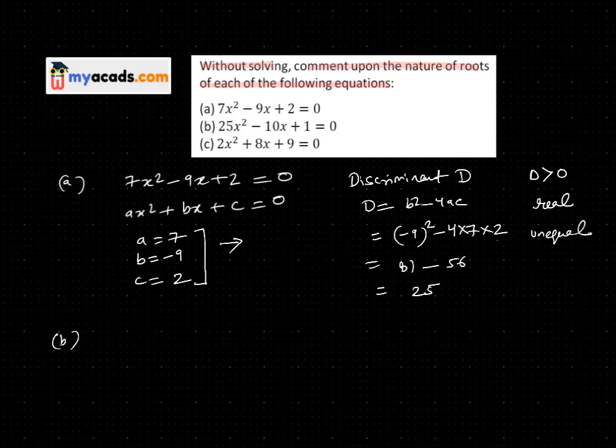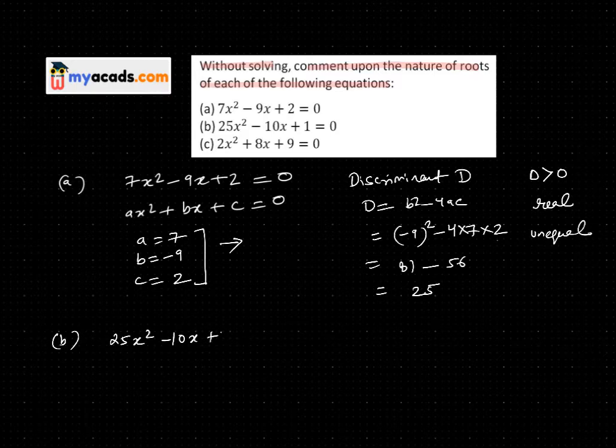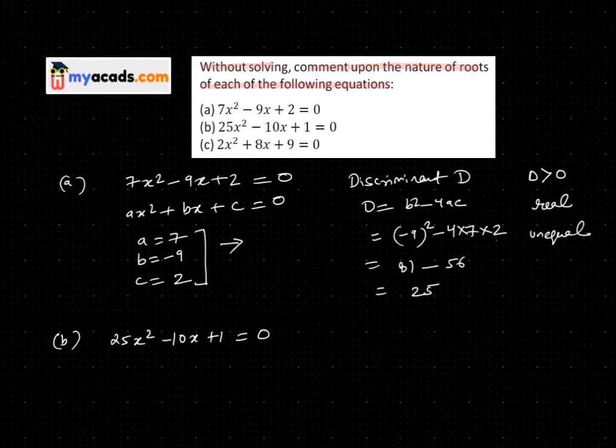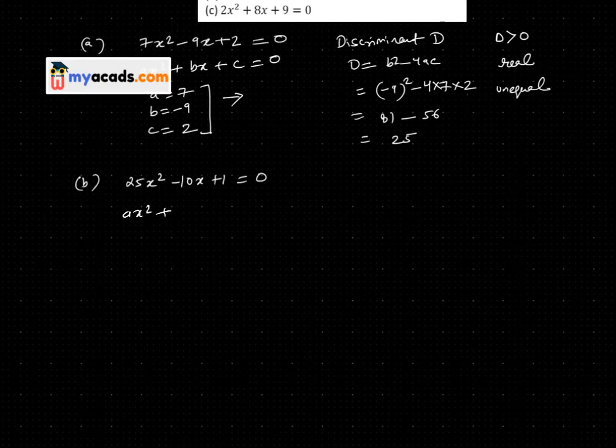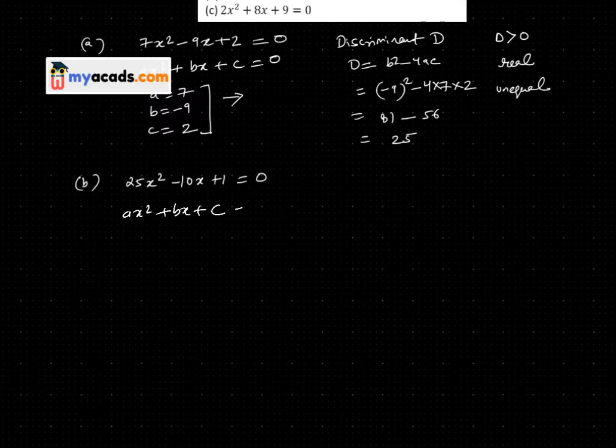Now the second equation is 25x² - 10x + 1 = 0. I will compare this to the standard form ax² + bx + c = 0. So a = 25, b = -10, and c = 1.